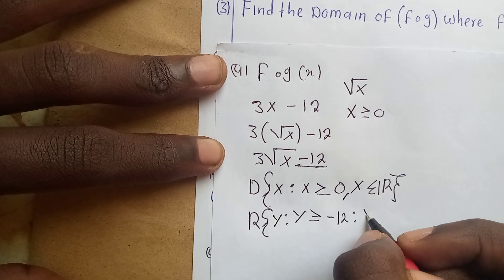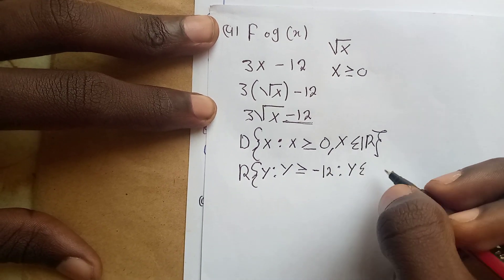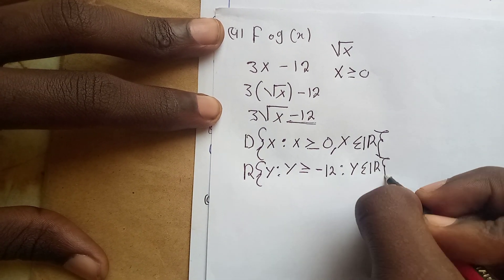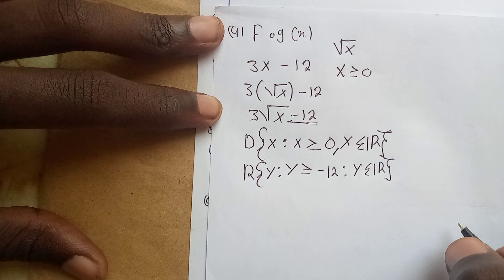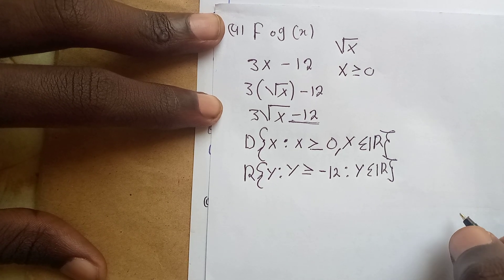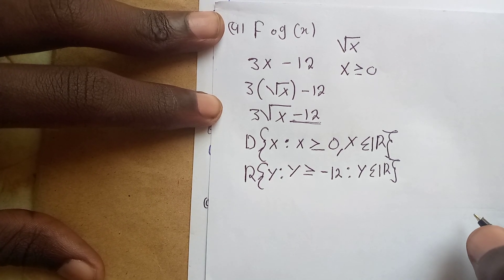For the range, we consider all values on the y-axis. The range is: y is such that y ≥ −12, and y is a member of all real numbers. So the range is [−12, +∞).